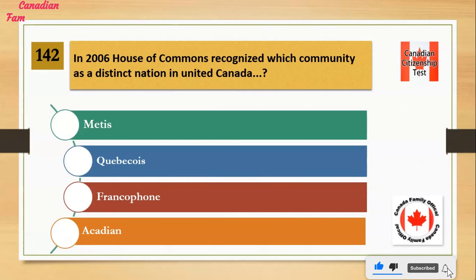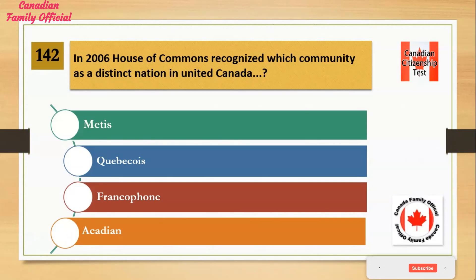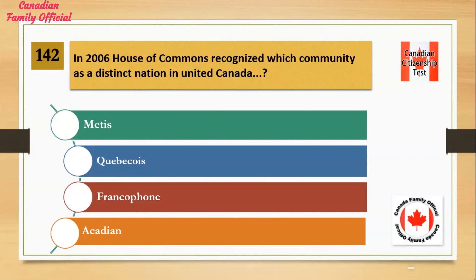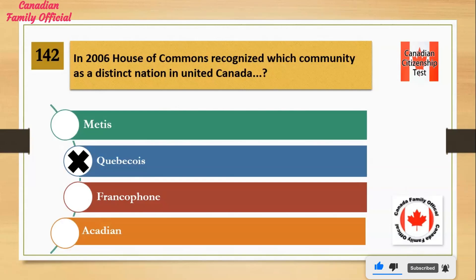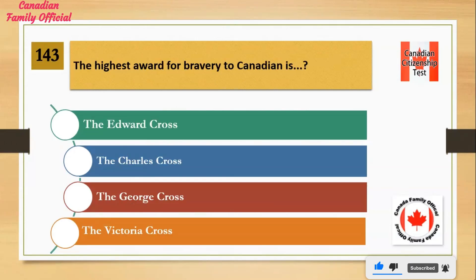In 2006, the House of Commons recognized which community as a distinct nation within Canada? Number 1: Métis. Number 2: Québécois. Number 3: Francophone. Number 4: Acadian. And the answer is Québécois.